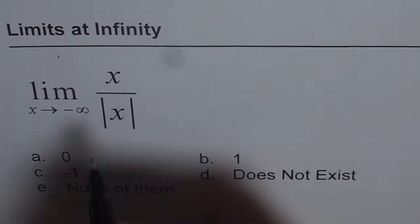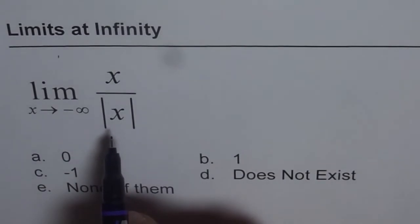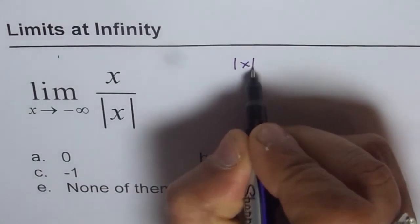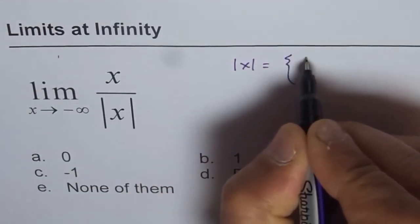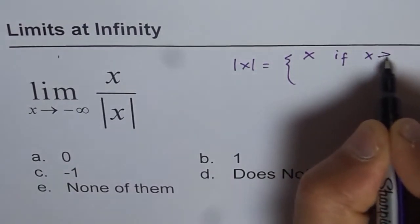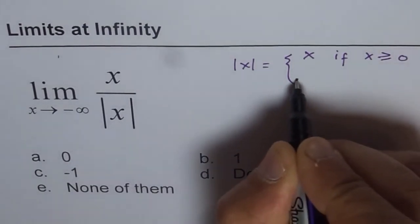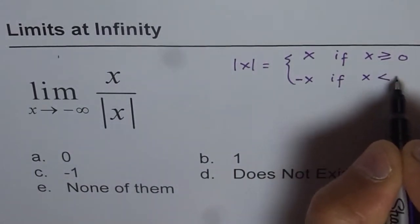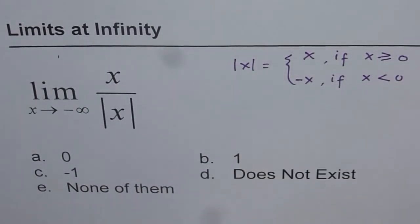What is absolute x? It is very important to understand this to answer this question. Absolute x is equal to x if x is greater than or equal to 0, and it is equal to minus x if x is less than 0. That is how we define absolute x.